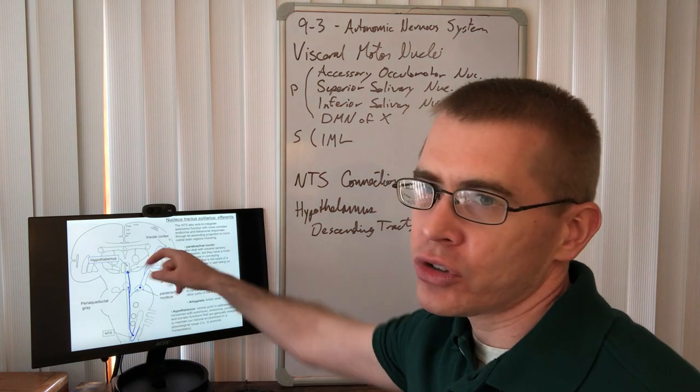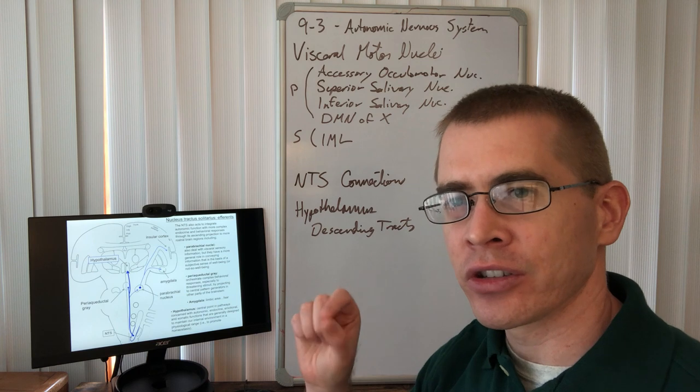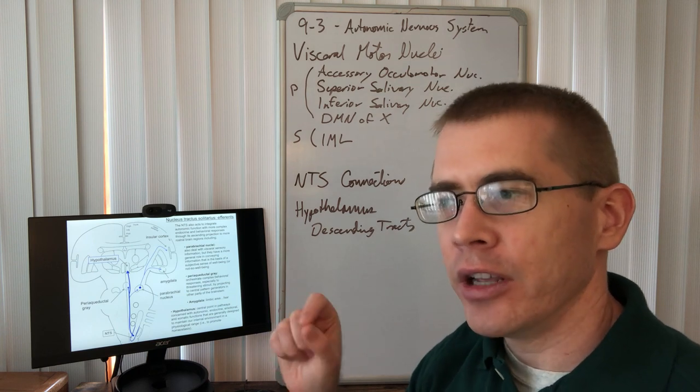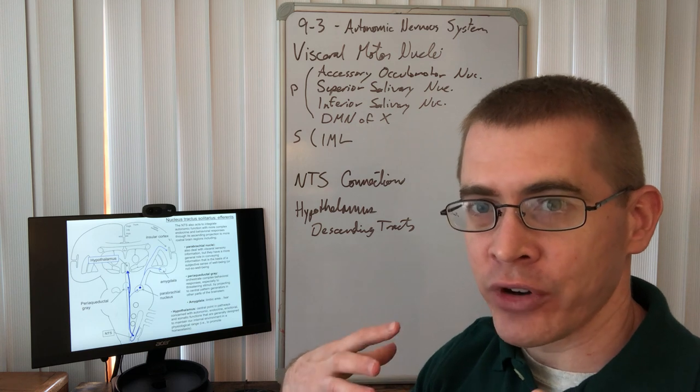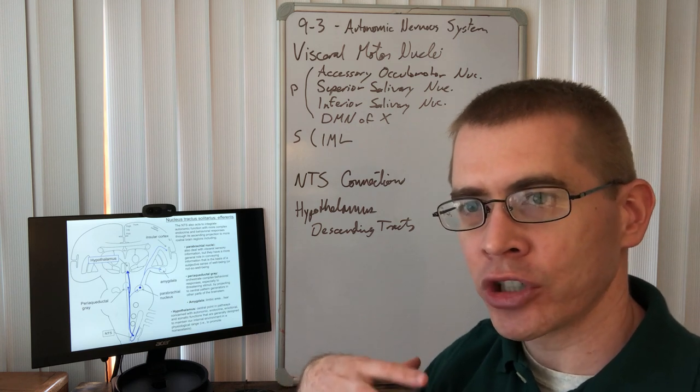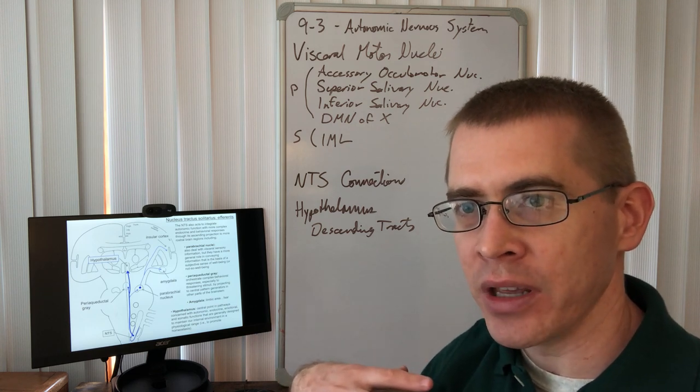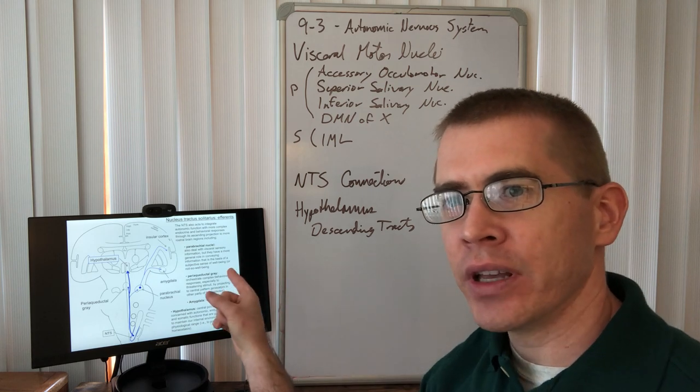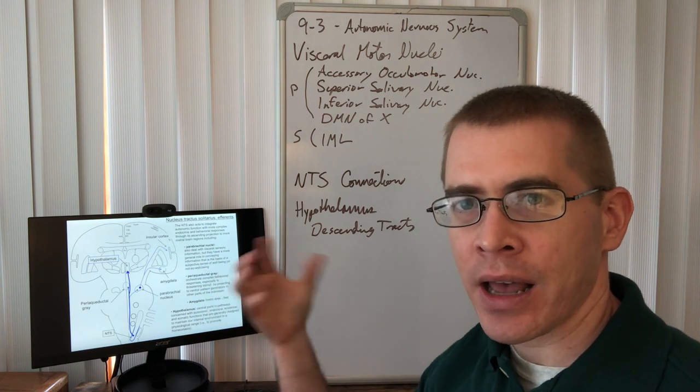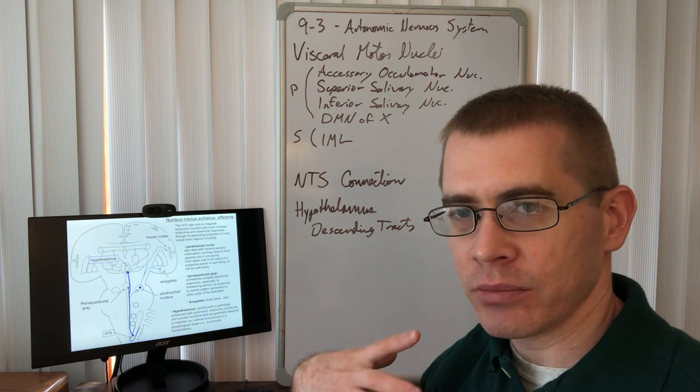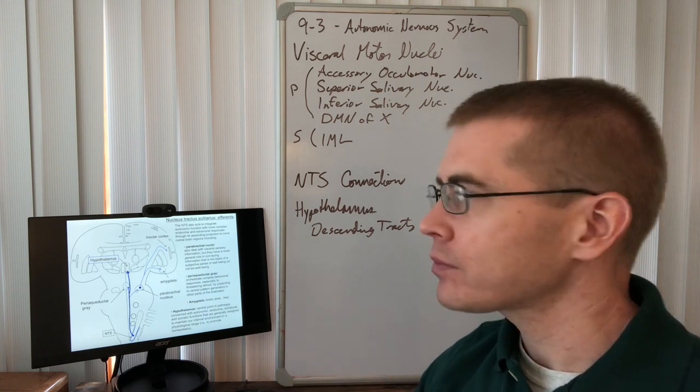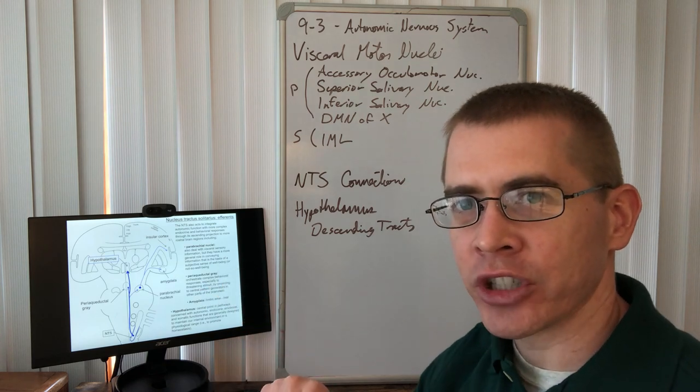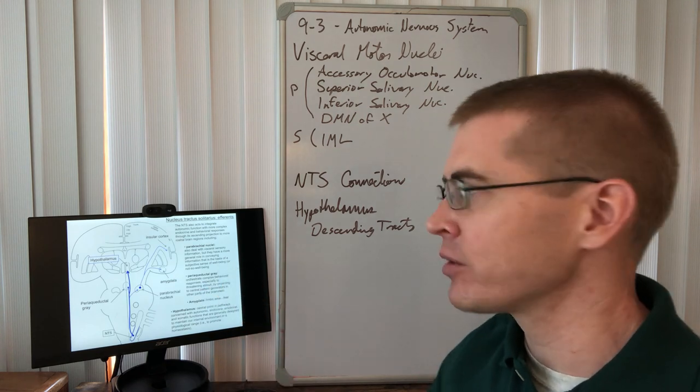Part of that reward functionality as well with dopamine. But parabrachial nucleus is also sending this information to the insular cortex. Insular cortex is responsible for sensing of your internal states and your emotional states, your internal well-being. This is how you get conscious information about how your body is doing in an internal and emotional sense. That's where that information is consciously processed in the insular cortex.